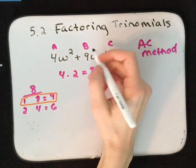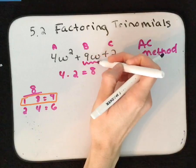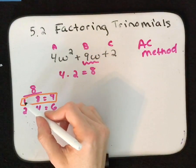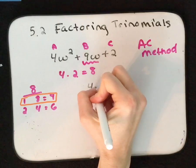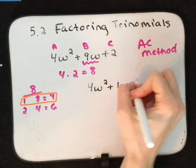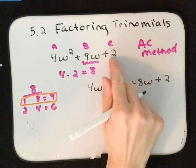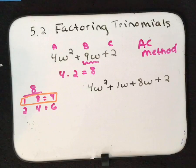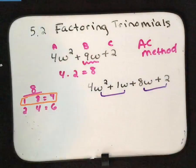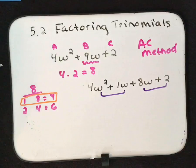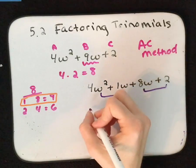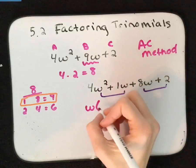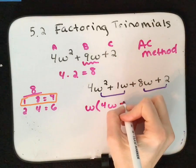The reason we did that is we're going to split our 9w into two parts. We're going to make it 1w plus 8w, because that gives us 9w. When we do that we have 4w squared plus 1w plus 8w plus 2. Now we can group and factor by grouping. Looking at 4w squared and 1w, they have a w in common, so if I pull out a w I'm left with 4w plus 1.